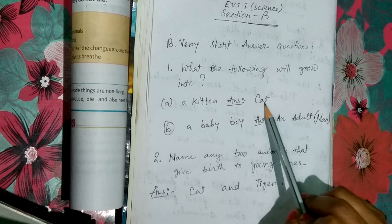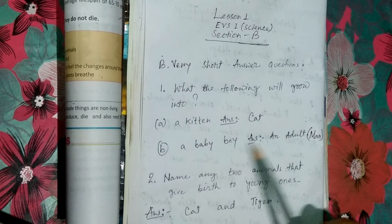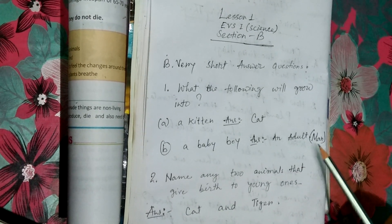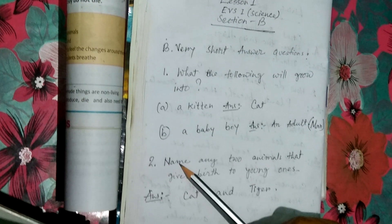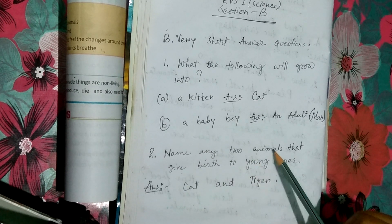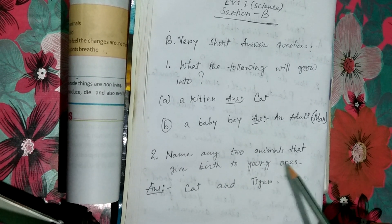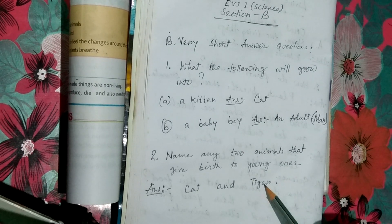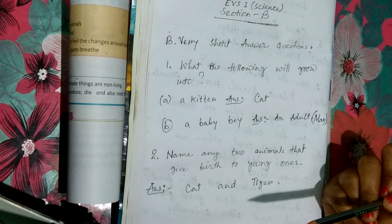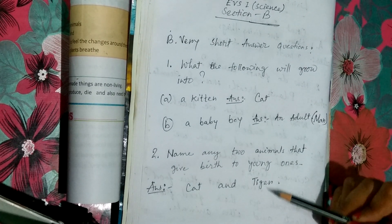Here I have written: kitten — answer cat; baby boy — an adult (in brackets: man). For number two, I have written: any two animals that give birth to young ones are cat and tiger. You can write other animal names of your own choice as well.